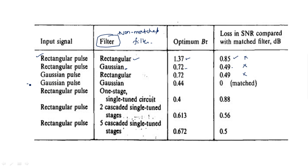A Gaussian filter with a Gaussian pulse input has B×τ = 0.44 and SNR loss = 0 dB, meaning there is no loss in signal-to-noise ratio. This qualifies it as a matched filter, since by definition a matched filter improves the signal-to-noise ratio. So a Gaussian filter with Gaussian input pulse is effectively a matched filter.